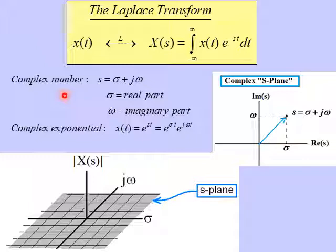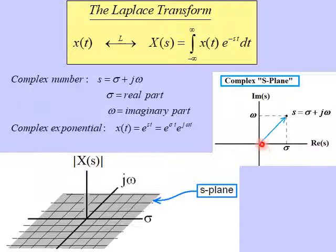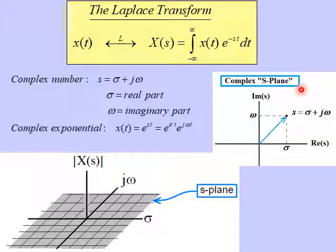What is s? Well, s is a complex number. It has a real part, sigma, and a complex part, j omega, which is the same as the Fourier Transform. So s can be plotted in the complex s-plane. The s-plane has the real part of s as the horizontal axis — that's sigma — and the vertical axis is the imaginary part of s, where omega shows up. A particular value of s is seen as a vector in this complex s-plane.